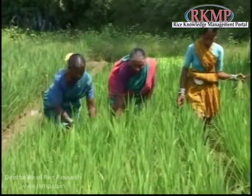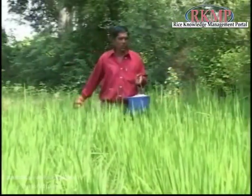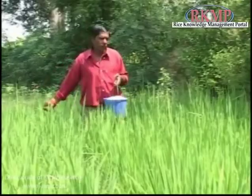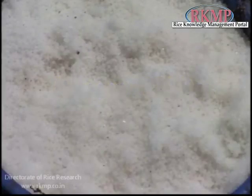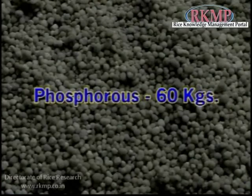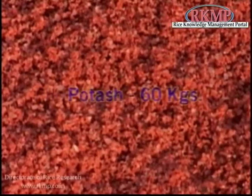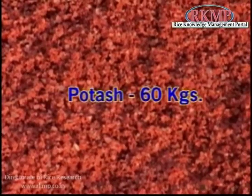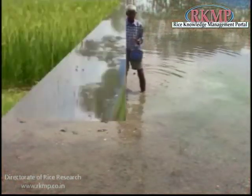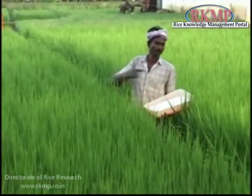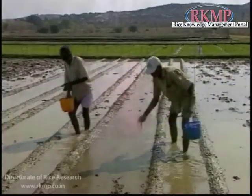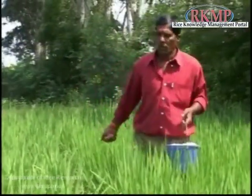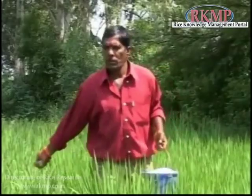Crop management plays an important role in getting higher seed yield. A dose of 120 kilograms of nitrogen, 60 kilograms of phosphorus, and 60 kilograms of potash per hectare is ideal. Nitrogen may be given in three to four splits and potash in two splits. A higher dose of fertilizer should be applied to the male rows.